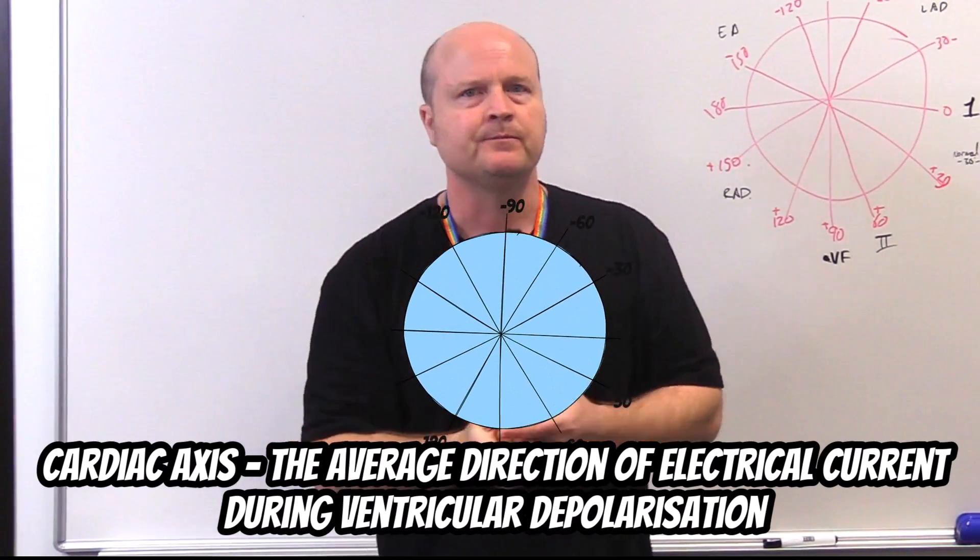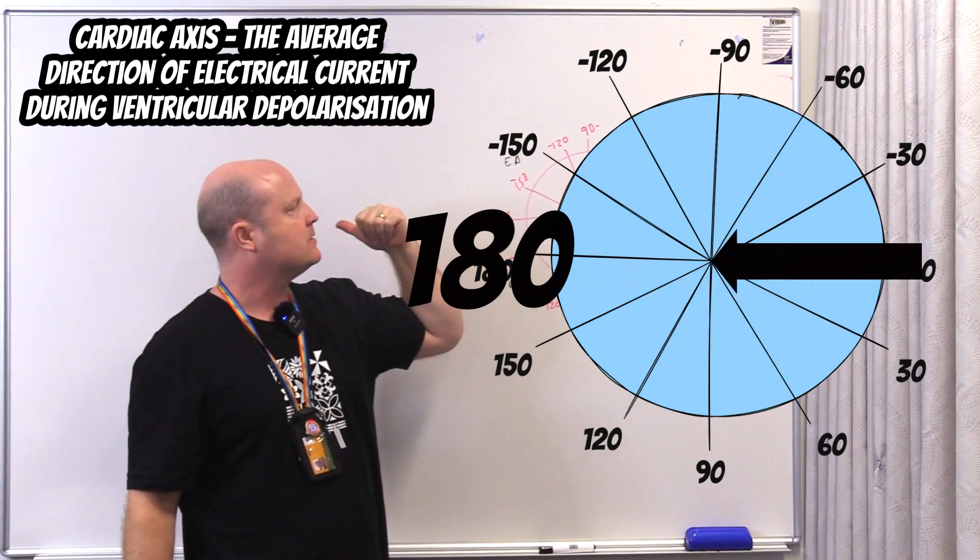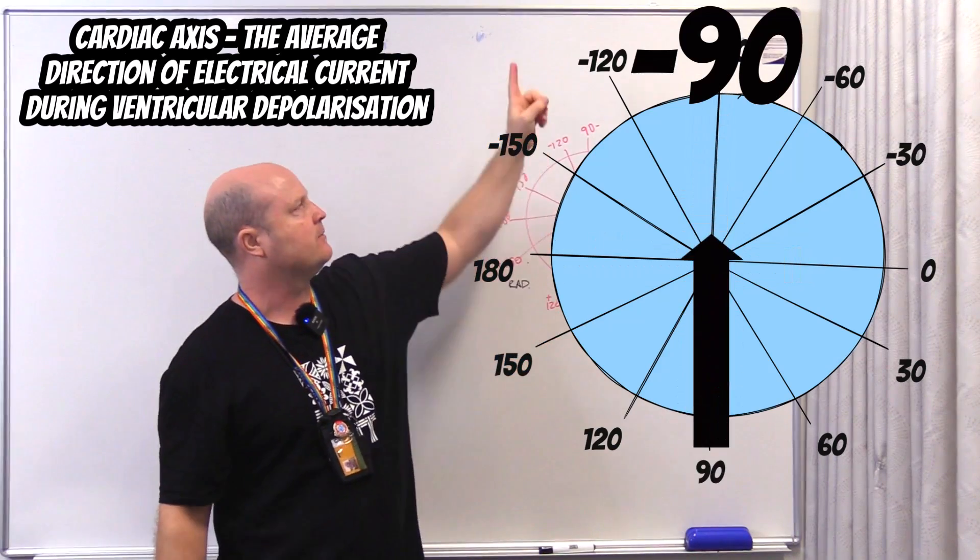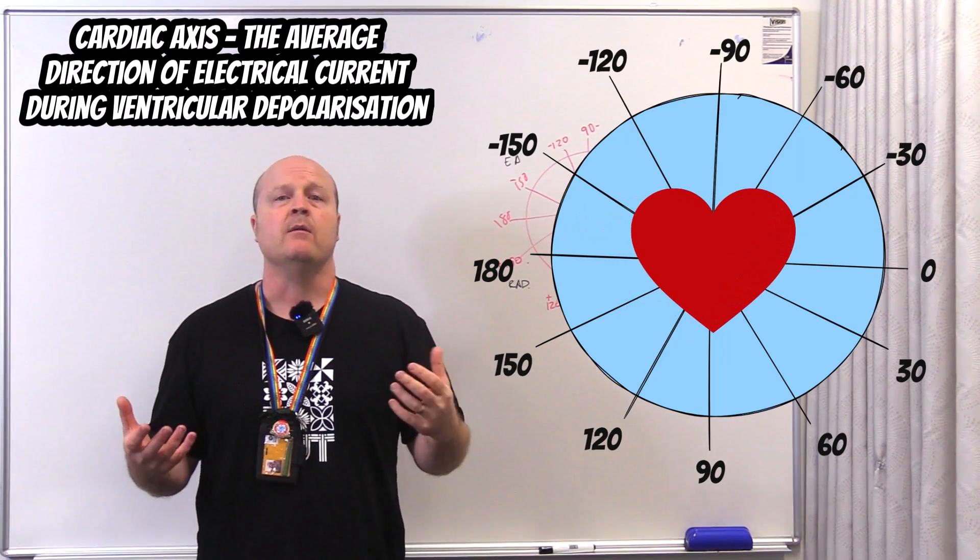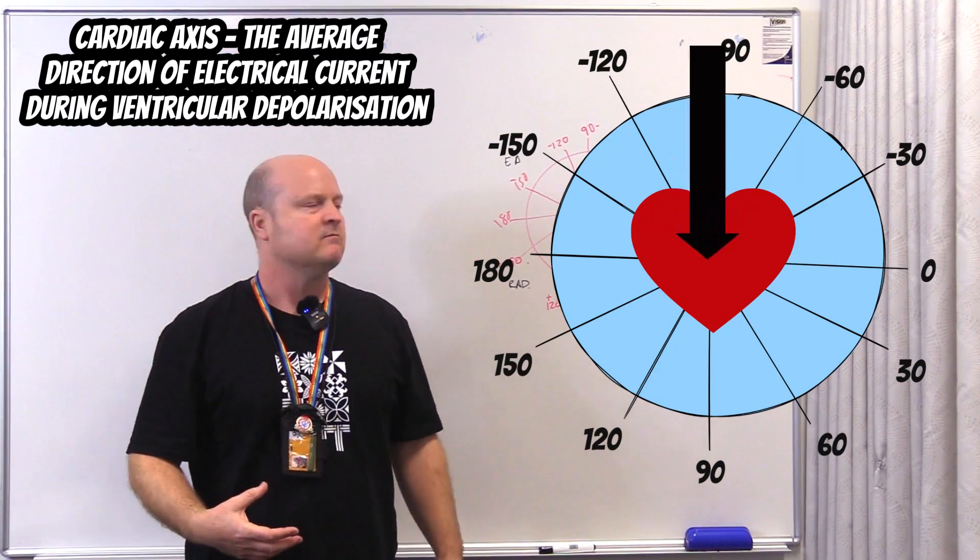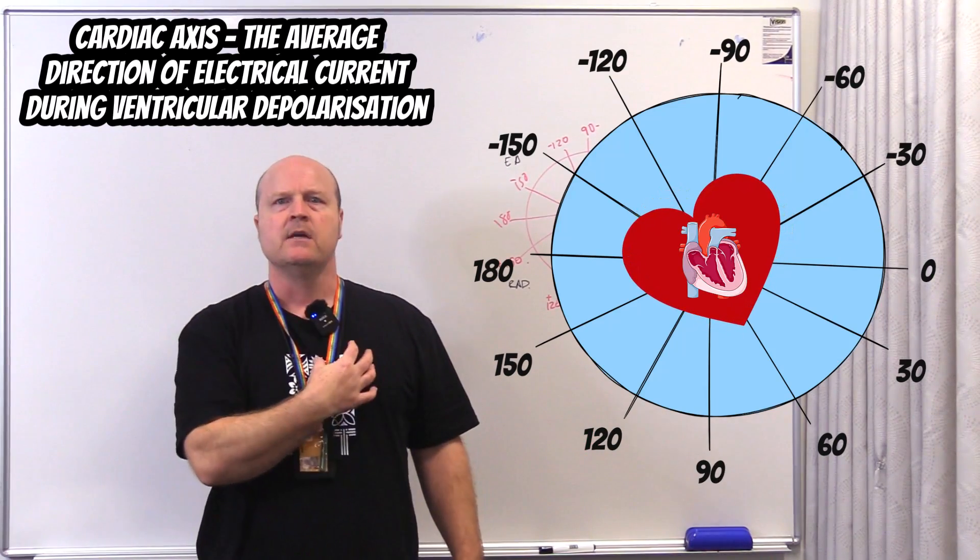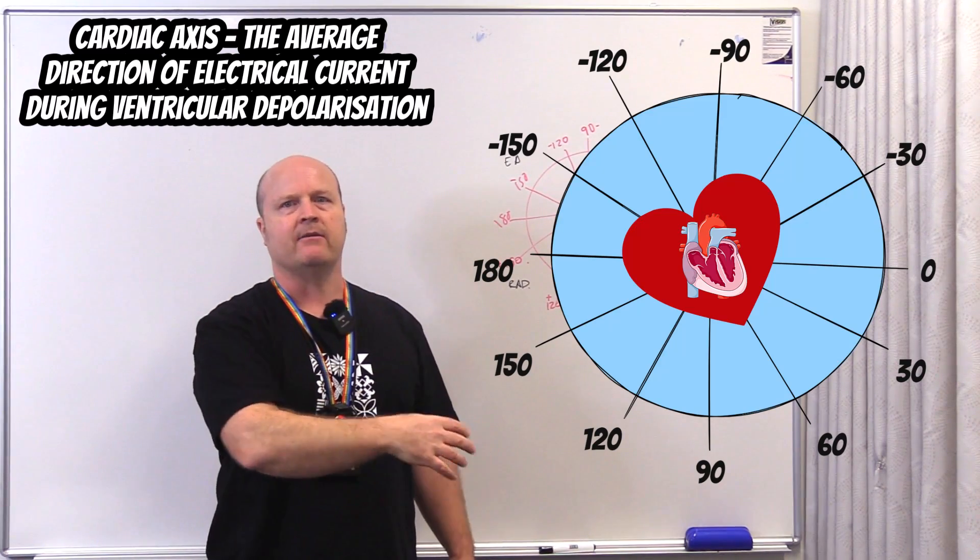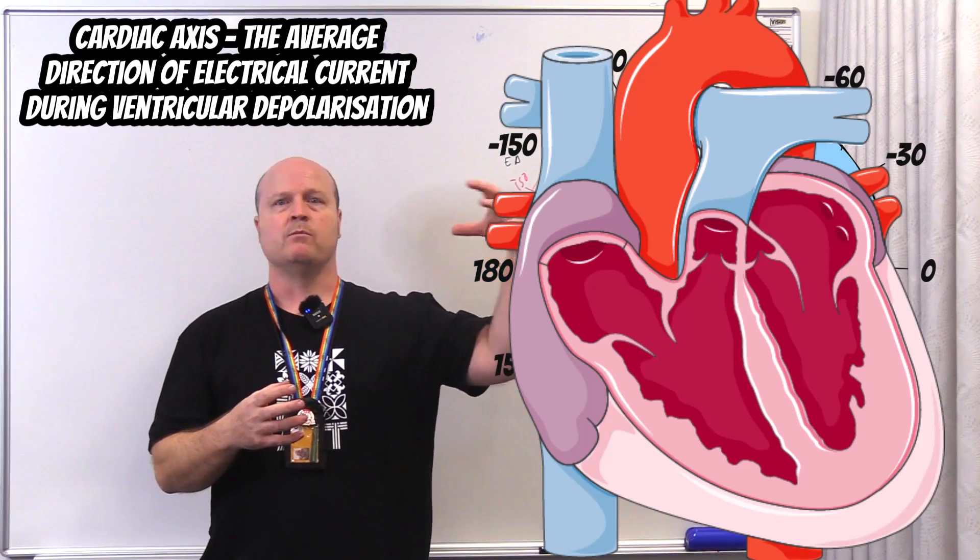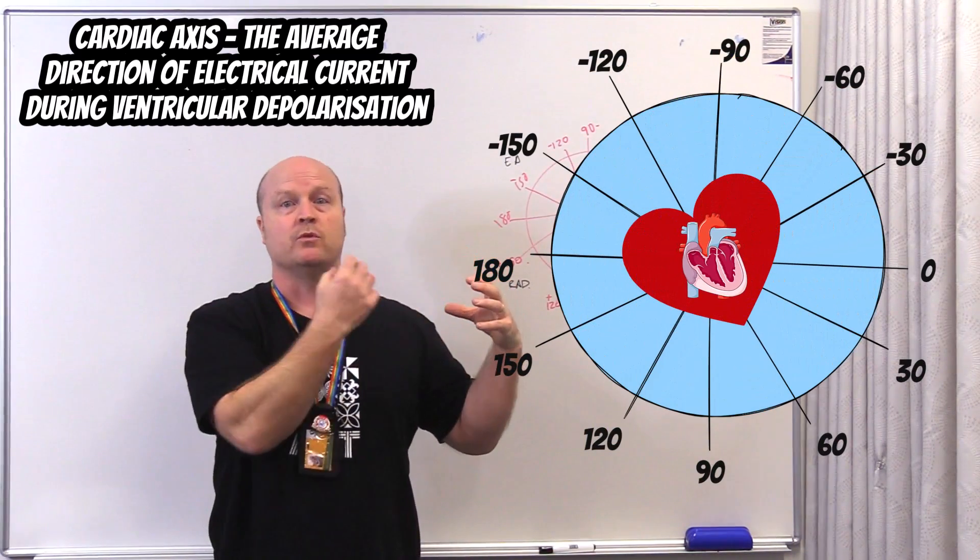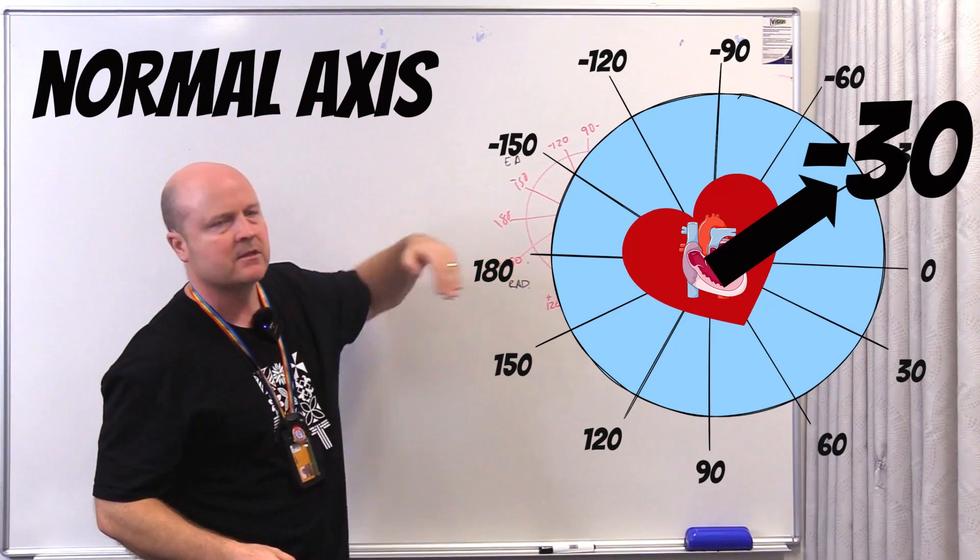If we set up a wheel of direction with zero degrees straight towards the left, 180 towards the right, positive 90 straight down, and negative 90 straight up, and put a heart on top of that, you'd expect the direction of travel of the impulse would be from the top to the bottom, so 90 degrees. But our heart is kind of on a tilt to the left, so our axis will generally tilt slightly to the left. The other thing that will influence it is the left side of the heart is bigger, so more muscle, so the current is going to deviate a bit more towards that bigger side of the heart. So our normal axis is between negative 30 to positive 90 degrees.